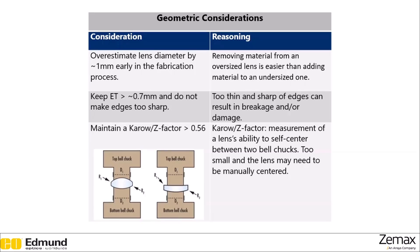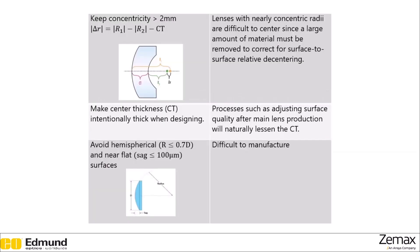You should maintain a Karo z-factor above 0.56. The Karo z-factor is a measure of a lens's ability to self-center itself between two bell chucks. If the lens has too flat or too weak a radius of curvature, the lens will not center well and you'll end up with a misaligned system. Additionally, if the lens is too small, it may not fit between the bell chucks properly and will need to be manually centered.